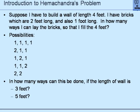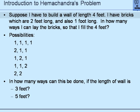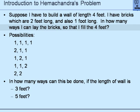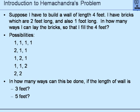We will quickly look at another interesting problem called Hemchandra numbers. Suppose I have to build a wall of four feet long and I have bricks of two kinds: one-foot bricks and two-foot bricks. The question is: in how many different ways can I lay the bricks to make four feet of length? The possibilities are: all four one-foot bricks; a two-foot brick followed by two one-foot bricks; one, two, one; one, one, two; or two two-foot bricks — five total possibilities. This is an exercise in combinatorics.